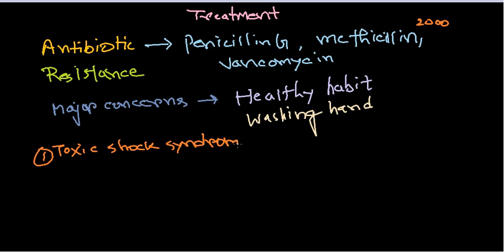Toxic shock syndrome is brought about by toxins or superantigens. The second kind of disease condition they cause is via skin lesions.